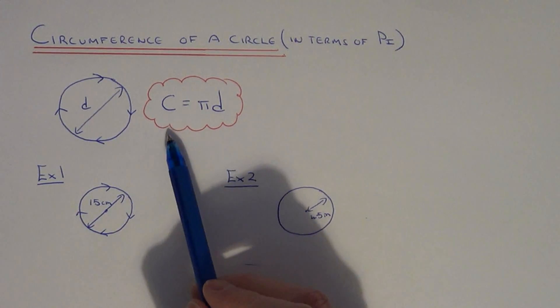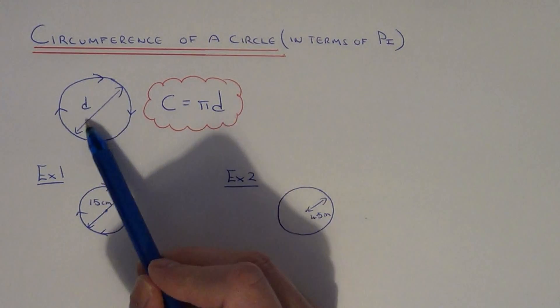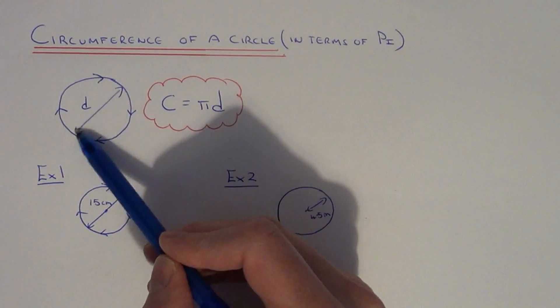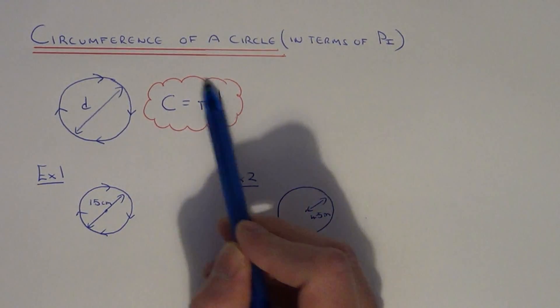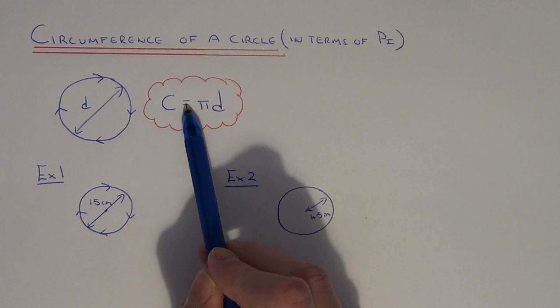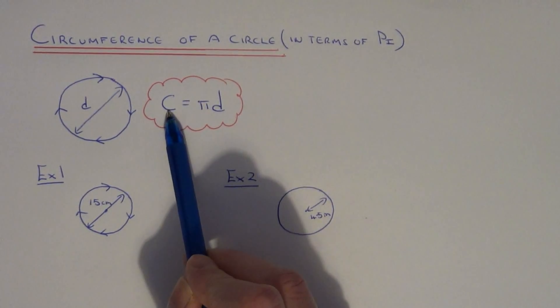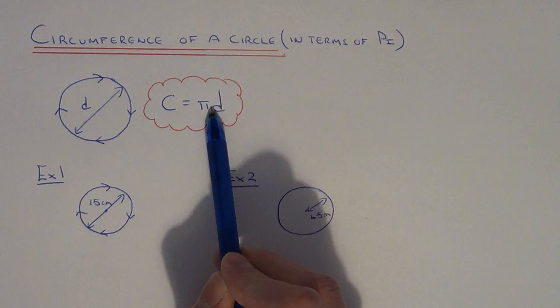All you need to do is substitute the diameter of the circle into this formula. The diameter is the distance all the way across the center. The formula is c equals pi d, which stands for circumference equals pi times diameter.